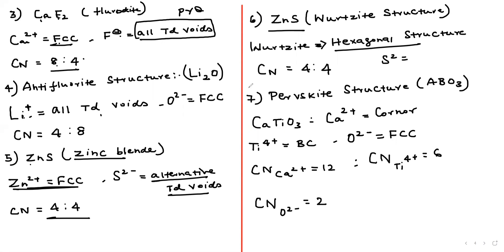An important example: perovskite structure, formula ABO₃. For example, calcium titanate CaTiO₃ — Ca²⁺ is at the corners, Ti⁴⁺ is at the body center, and O²⁻ occupies the face centers. This is a very important structure to memorize for the exam.